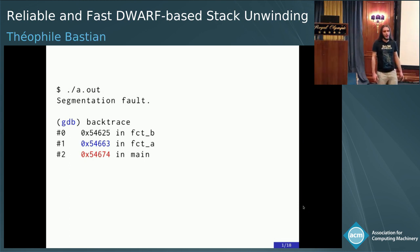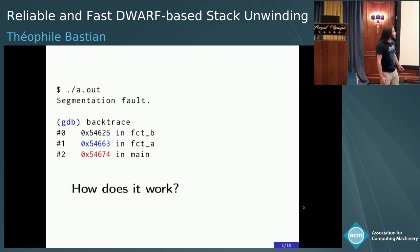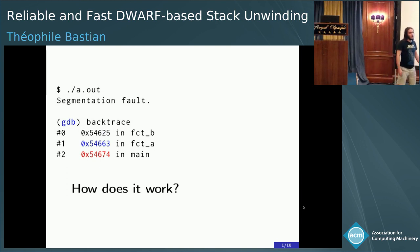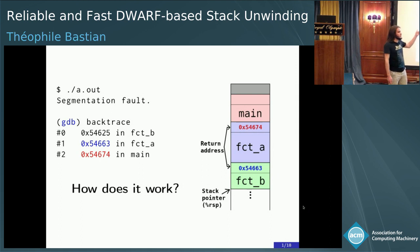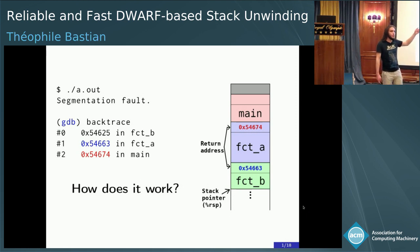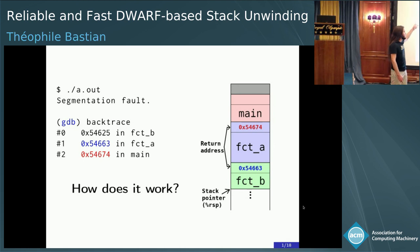My question for you now is, how is this working in real life? You probably know that these things here are addresses — actually return addresses — that are stored on the stack. For each nested function call, you have one stack frame, and the first thing in that stack frame is usually the return address to where execution should resume after this function has been executed. This is exactly what the debugger leverages to print a backtrace.